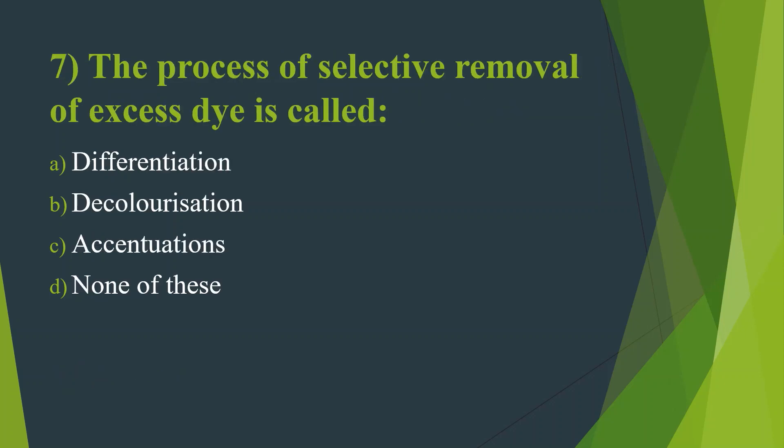Seventh question: The process of selective removal of excess dye is called — Option A: Differentiation. Option B: Decolourization. Option C: Attenuation. Option D: None of these. Here the answer is Option A — Differentiation. Differentiation is performed using diluted acid alcohol.